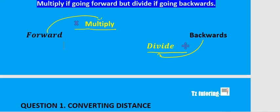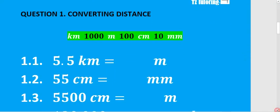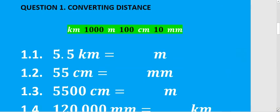Let's put that to some application, starting with distance. How would you convert distance? Our distance converter: one kilometer is a thousand meters, one meter is a hundred centimeters, and one centimeter has 10 millimeters. That is our distance converter.